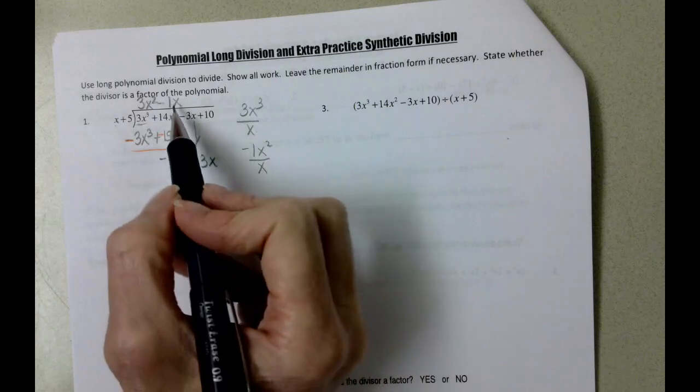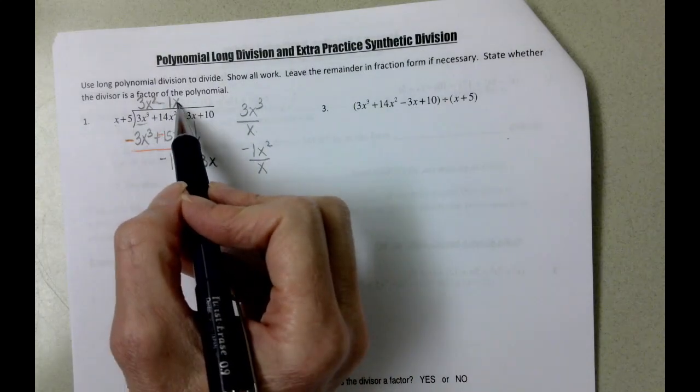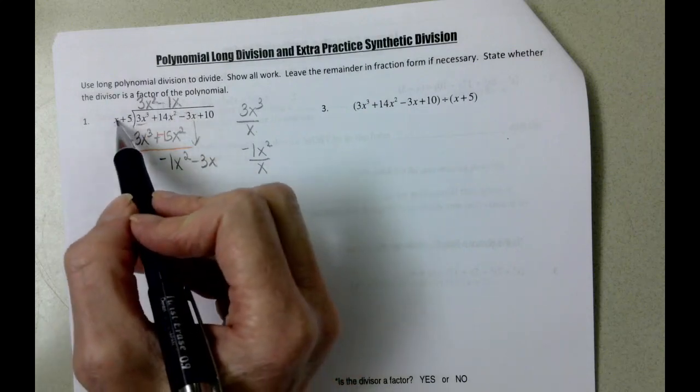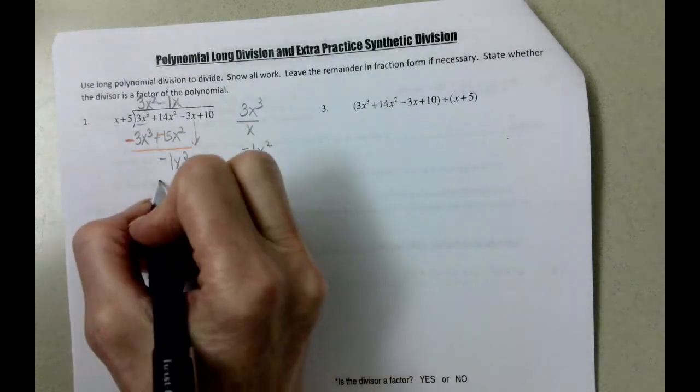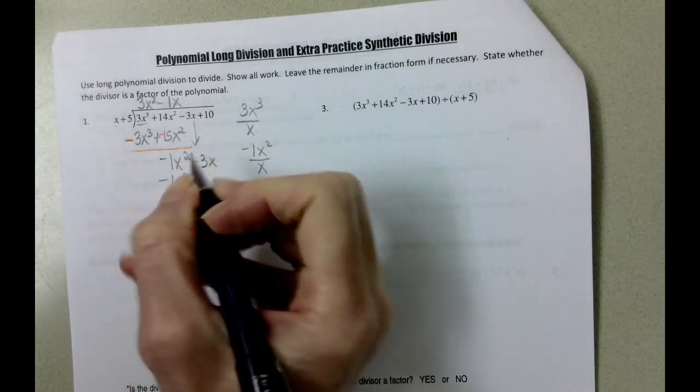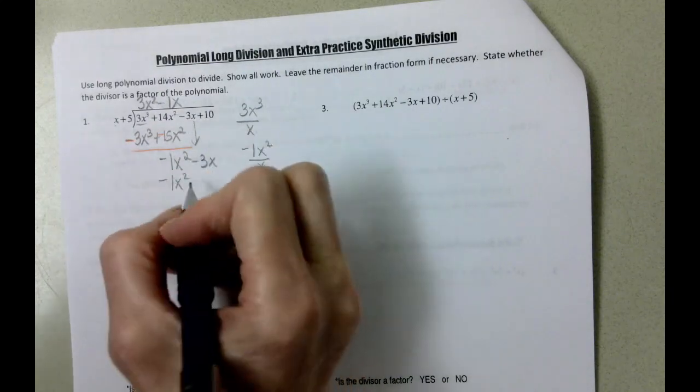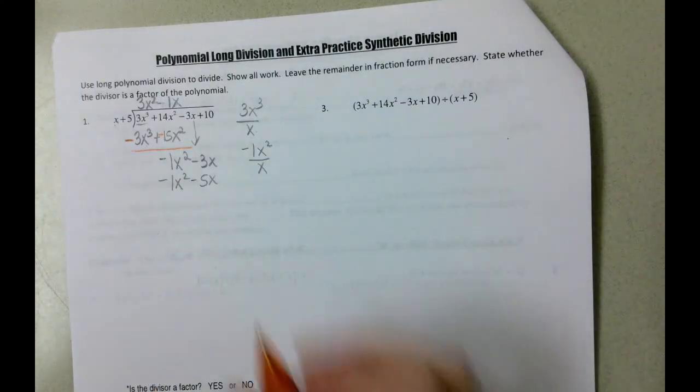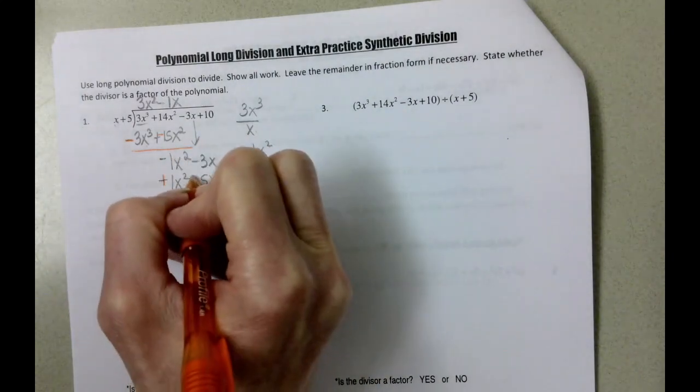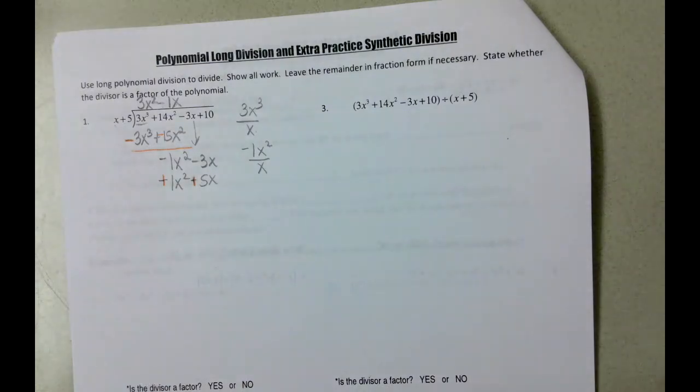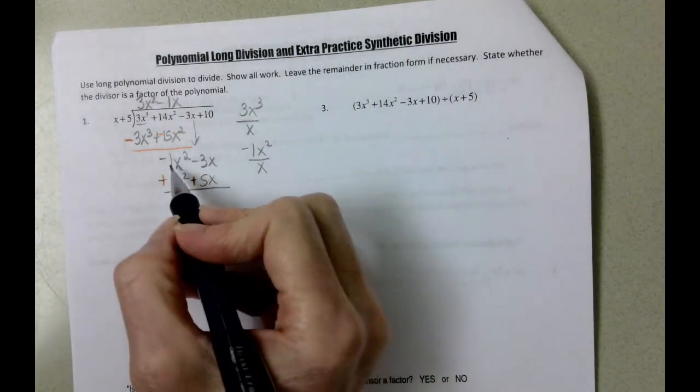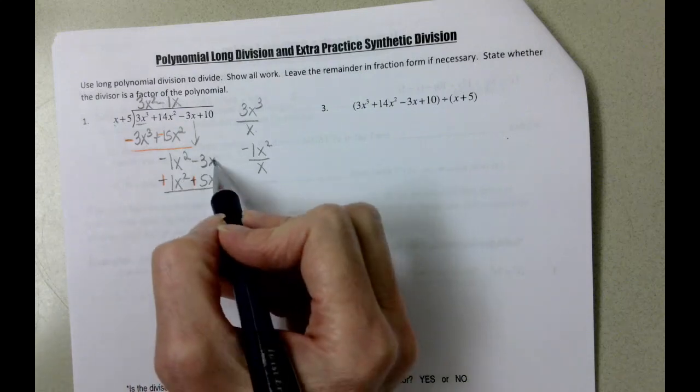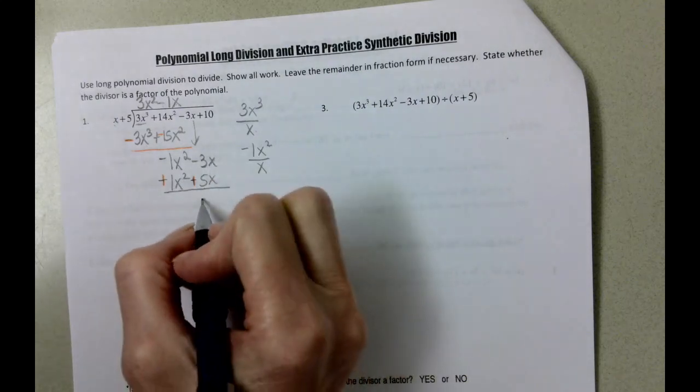And then we're going to use this part of our quotient to help us figure out the rest. Negative 1x times positive x is negative 1x squared. Negative 1x times 5 is negative 5x. And then we're going to change both sides. Negative 1x squared plus 1x squared is 0. Negative 3x plus 5x is 2x.